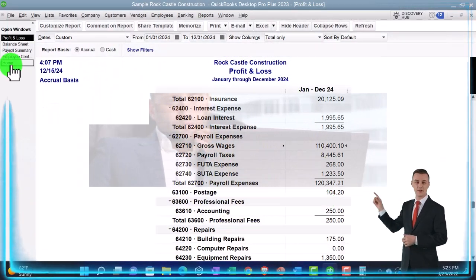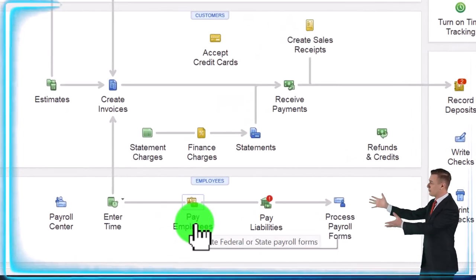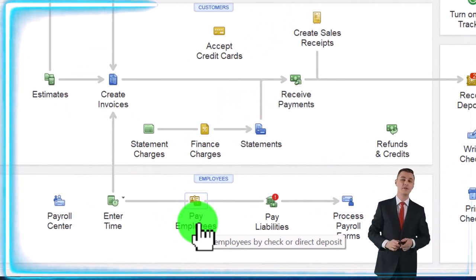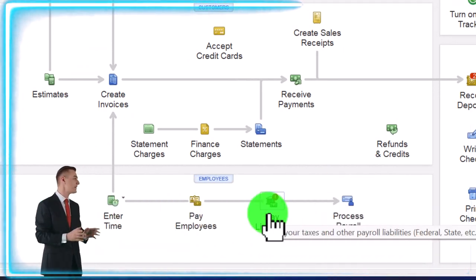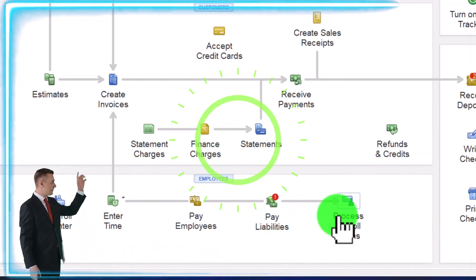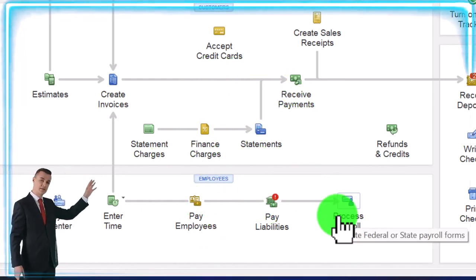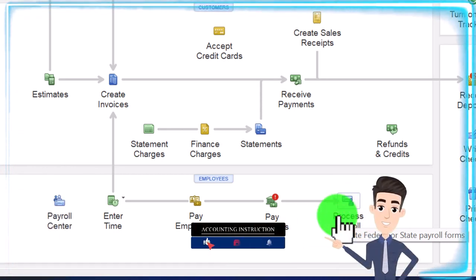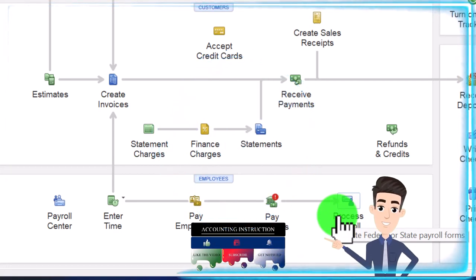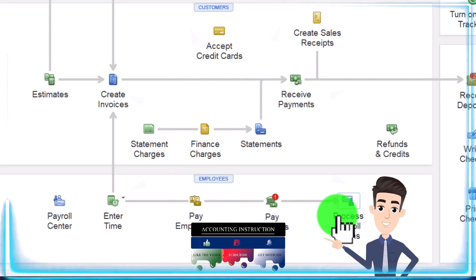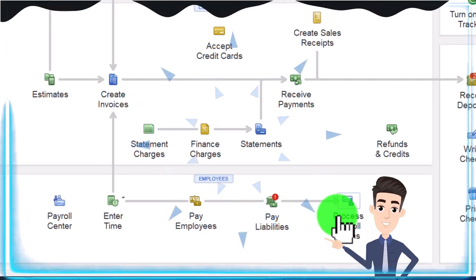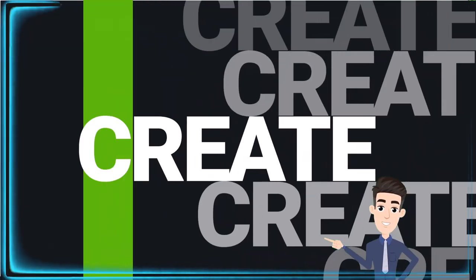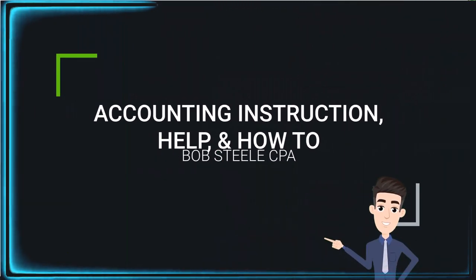That's the general idea of payroll. Going back to the home page: you've got the payroll cycle — weekly, bi-weekly, monthly — then you pay the liabilities after paying employees, then you process the payroll forms. QuickBooks helps you produce the informational forms required for government compliance. You may also have state forms depending on your state, and QuickBooks is getting better and better at meeting state and local needs for those specialized reports as well.